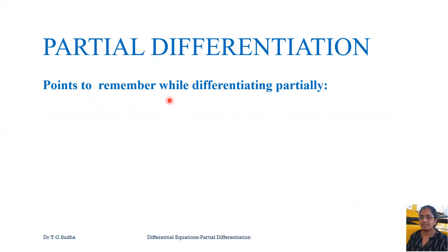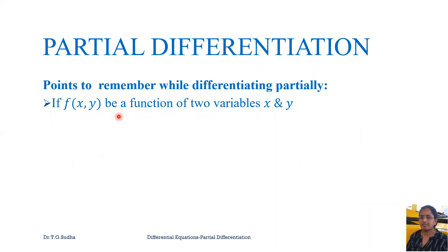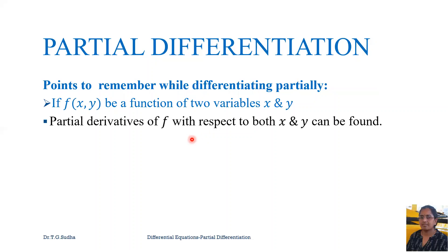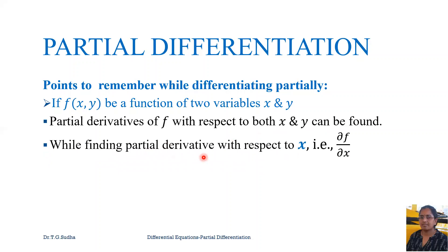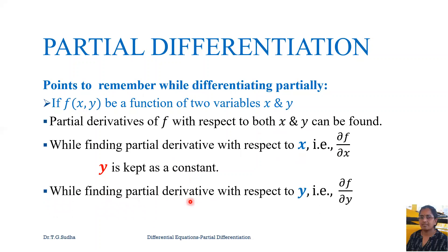Now let us look at the points to be remembered while differentiating partially. If f is a function of two variables x and y, partial derivatives of f with respect to both x and y can be found. While finding the partial derivative with respect to x, that is ∂f/∂x, y is kept as constant. Similarly, while finding the partial derivative with respect to y, that is ∂f/∂y, we need to keep x as a constant.